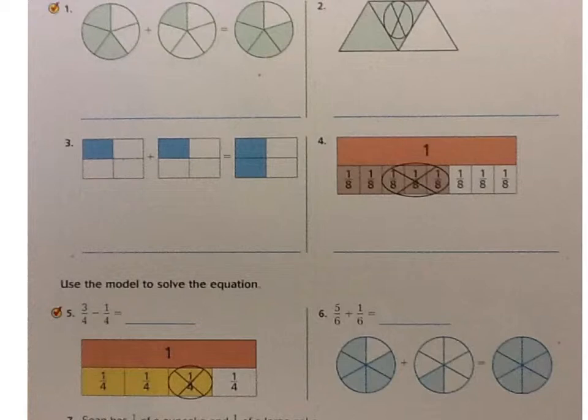We're going to start to make some equations. We're going to look at number one first where we have this picture right here plus this picture right here equals this picture right here. And so all we're going to do is we're going to label each fraction picture that we have.